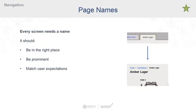We talked earlier about information architecture being all about wayfinding. Just like every street corner needs a name, every screen on your project needs one as well. Your page name should be in the right place, be prominent, and match your user's expectations. Users expect to see a page name at the top of your content — that's the right place for it. And in addition to being in the right place, it should be large enough to be instantly recognized as the heading or title of a page. People shouldn't be guessing if these are labels or page names — it should be clear.